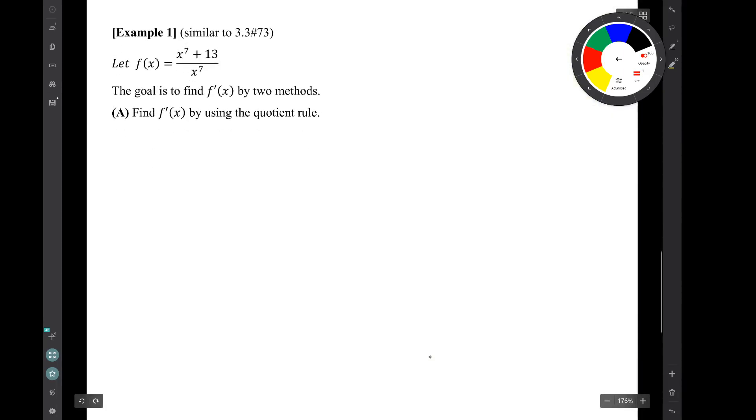Today, we'll just do one problem. It's similar to exercise 3.3, number 73. f(x) is this quotient. So we're going to find f'(x) by two methods. First, we're going to find f' using the quotient rule.